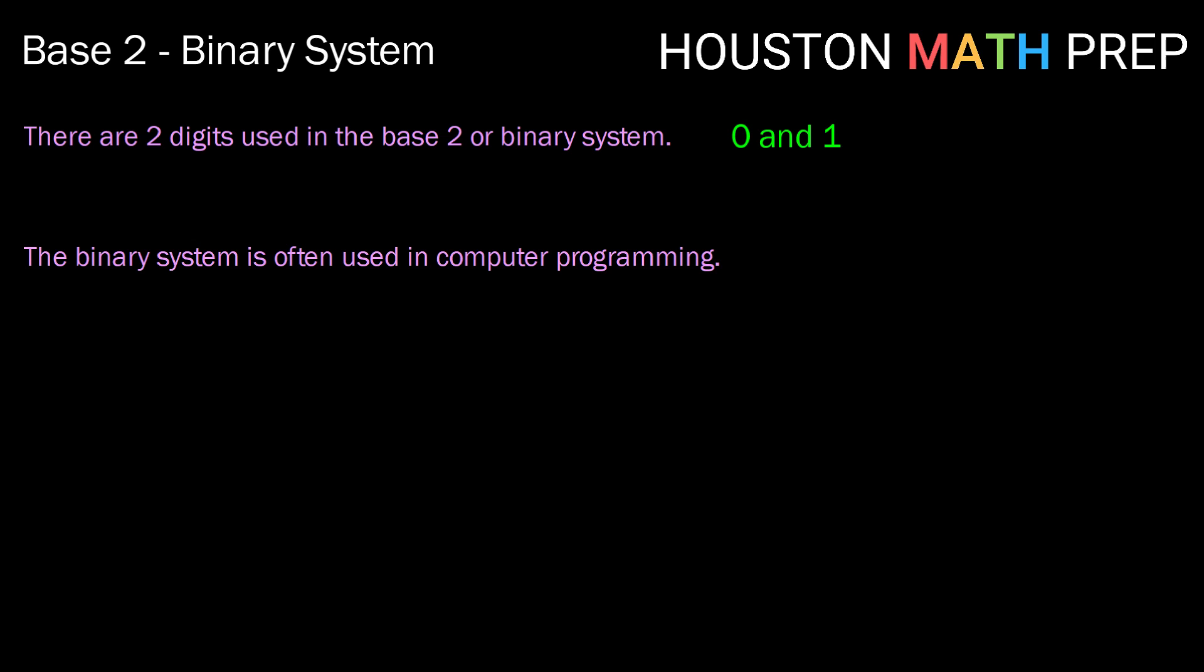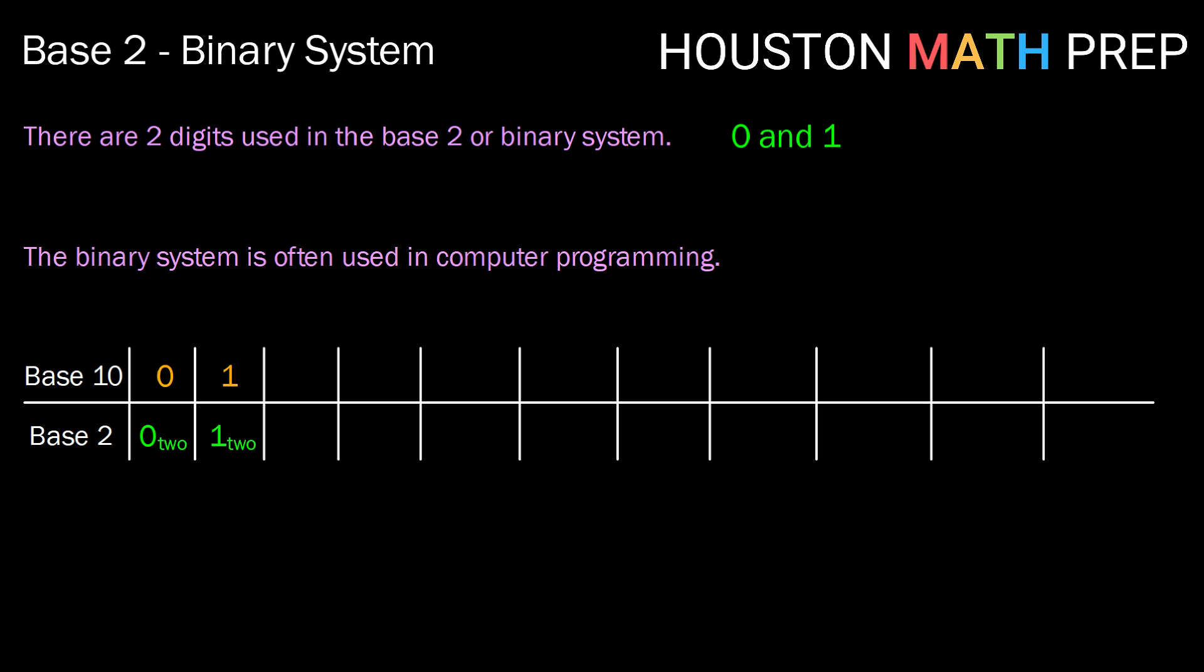Let's take a look at how it works. Comparing base 10 and base 2, 0 is the same in both, but in base 2 we use the subscript 2 to differentiate. 1 is the same way, but now we're out of digits in our binary system, so we start moving to the next place value and counting groups of 2. For the number 2, we have 1 group of 2 and 0 groups of 1, so 2 is written as 10 base 2. Using that same logic, 3 is 1 group of 2 and 1 group of 1, giving us 11 base 2.